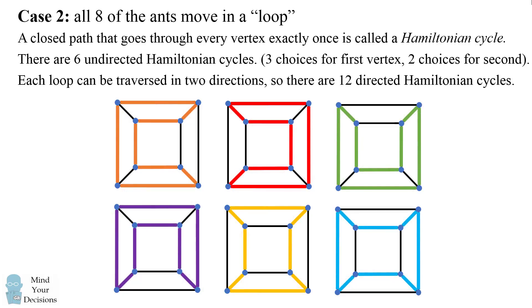So this means, since each loop can be traversed in two directions, there are 12 directed Hamiltonian cycles. In other words, 12 ways that the ants could move so that they would not collide. So now let's calculate the answer.